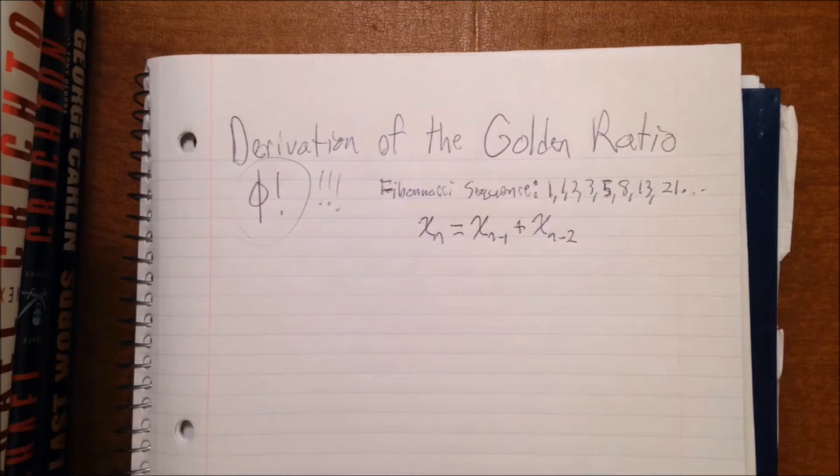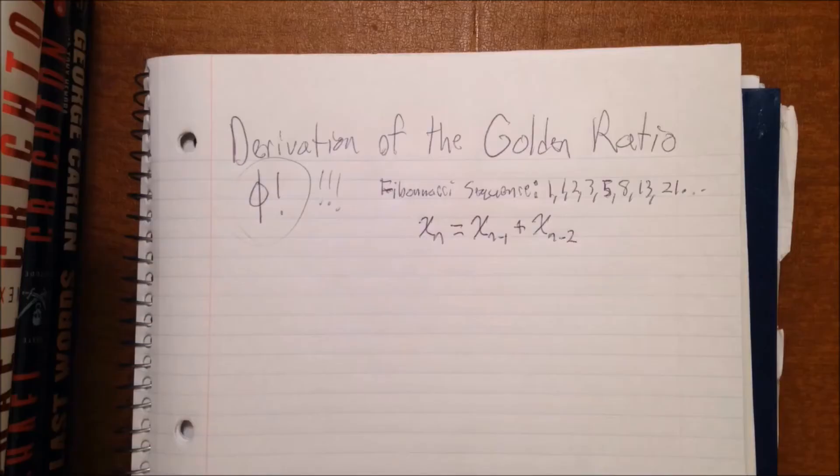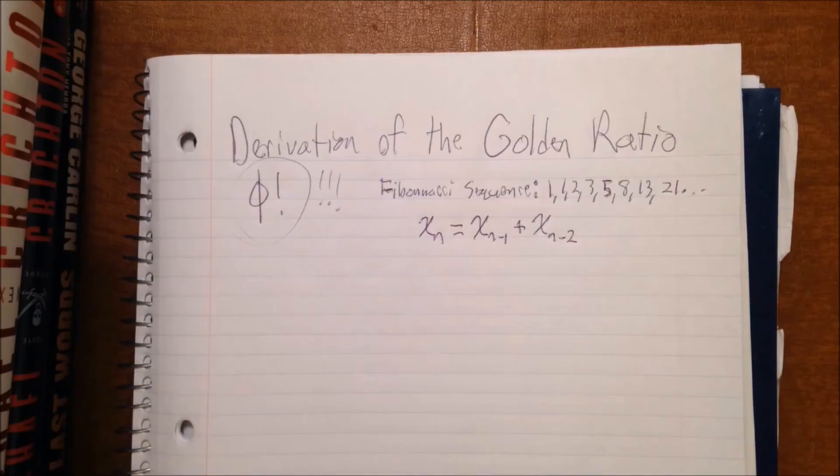But when you get to bigger successive numbers in the sequence, like 196,418 and 317,811, we're going to start getting pretty close to the actual value of phi when you divide those.